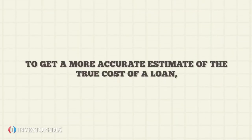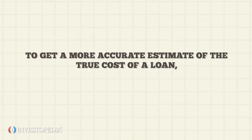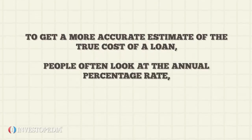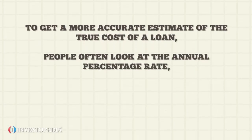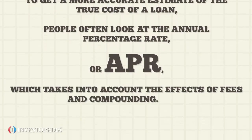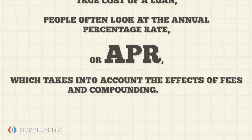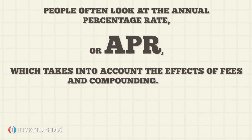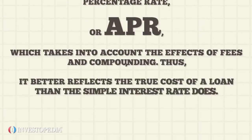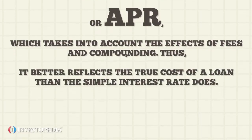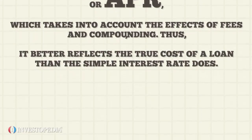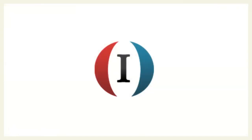To get a more accurate estimate of the true cost of a loan, people often look at the annual percentage rate, or APR, which takes into account the effects of fees and compounding. Thus, it better reflects the true cost of a loan than the simple interest rate does.